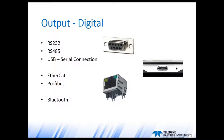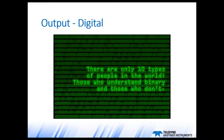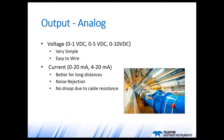RS-485 sensors are usually addressable. Once up and running, RS-485 networks are generally very reliable. There are also industrial buses available — more commonly accepted in Europe — including vacuum gauges for PROFIBUS and EtherCAT. There are even some wireless instrumentation options available. And here's a fun graphic: there are only 10 types of people in the world — those who understand binary and those who don't.